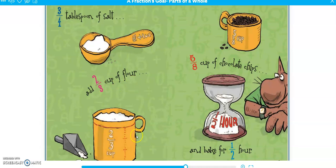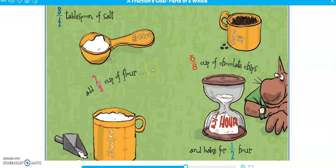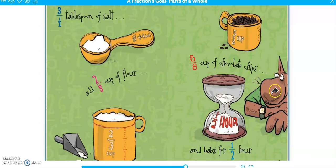If you're adding two thirds of a cup of flour, that would be smaller than a whole cup. It'd be two out of the whole — because three thirds is a whole, so two thirds means you're not quite all the way there for the full cup. Five eighths of a cup of chocolate chips means five out of the whole. If it was a whole cup, it'd be eight eighths, which equals one whole. And then you bake for half an hour — we all know half an hour is 30 minutes, so that's not a whole hour, it's half of it.